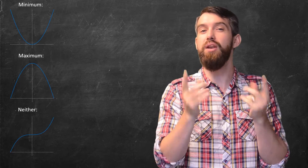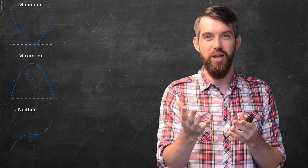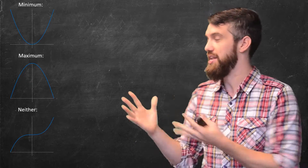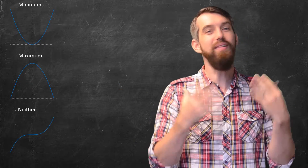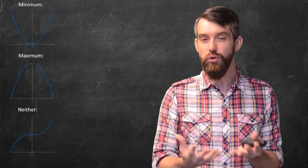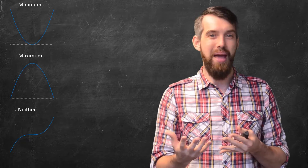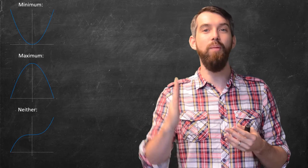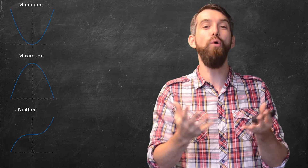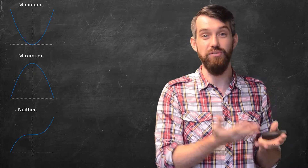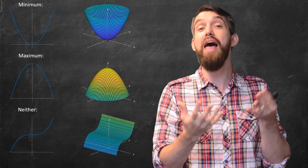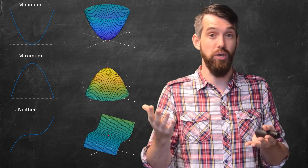Likewise, we had maximums, and also a third case where the derivative was zero. You had a horizontal tangent line at x equal to zero. But in this third case — an example of which is something like y equal to x cubed — it was neither a maximum nor a minimum. It went up, leveled off, and then went up again. Now, all three of these scenarios repeat themselves in the multivariable calculus case. You can have a minimum, you can have a maximum, and that neither situation can also occur.